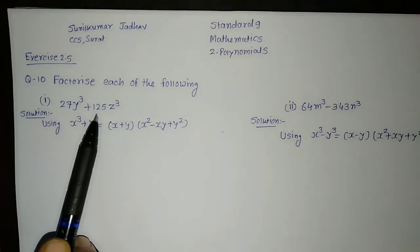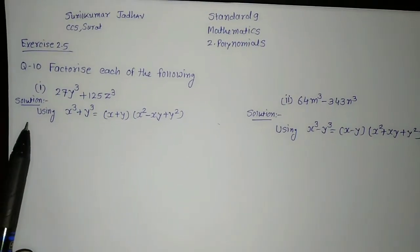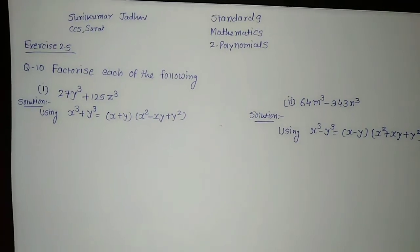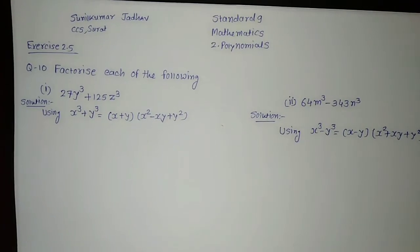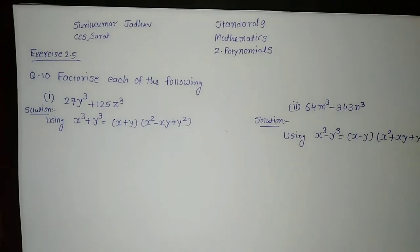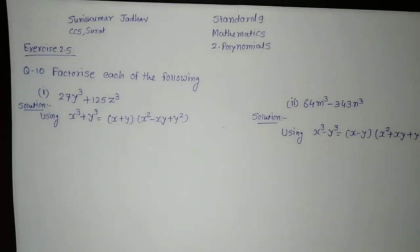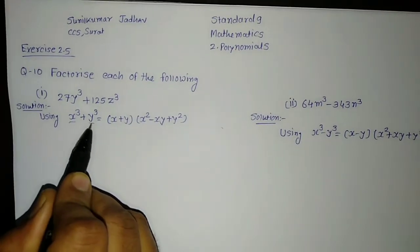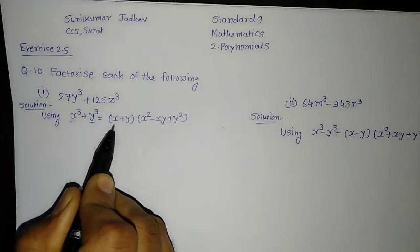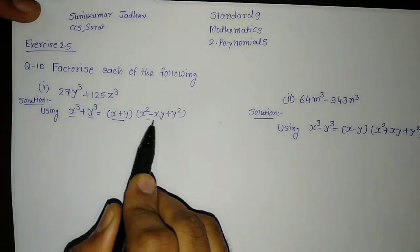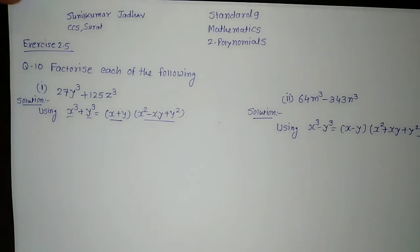27y cube plus 125z cube. We will start with the solution. As given in the hint, we have to use the formula that we verified in question number 9. This formula you have to remember to solve this kind of sum: x cube plus y cube is equal to x plus y, into another bracket, x square minus xy plus y square.